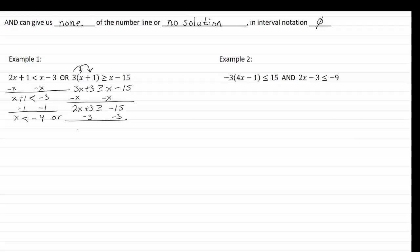Move our number over, we have two x is greater than or equal to negative eighteen. Divide by two, and x is greater than or equal to negative nine.